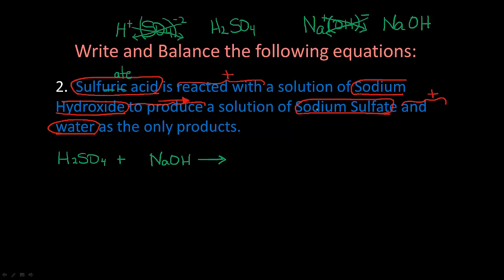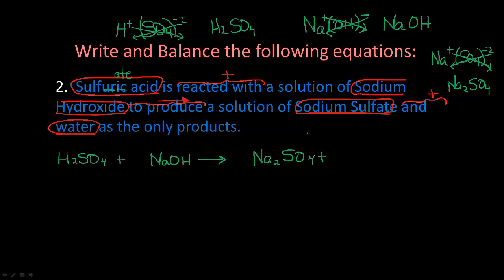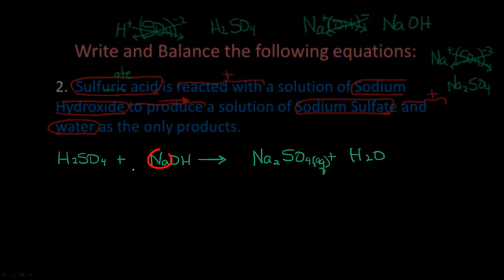A solution of sodium sulfate: Na has plus one, SO₄ has minus two. Cross them: the 2 goes down by Na, the 1 goes down by SO₄. The formula for sodium sulfate is Na₂SO₄. Then plus water — the chemical formula for water is H₂O. It says 'a solution,' so I put (aq) for aqueous.